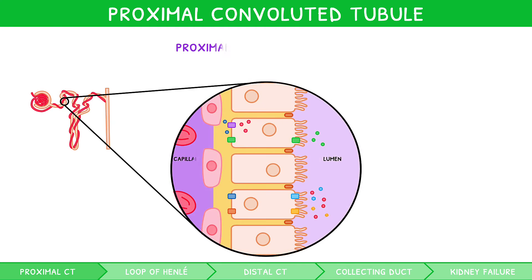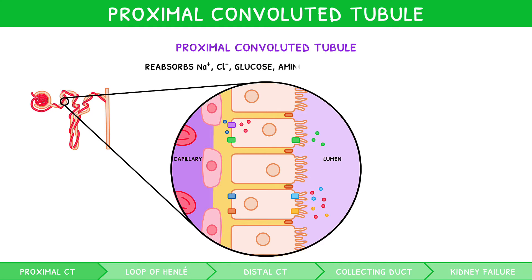As discussed previously, this twisted section forms the start of the nephron. You need to recall that it reabsorbs sodium ions, chloride ions, glucose, amino acids, and water. To do this, it contains many microvilli and mitochondria.